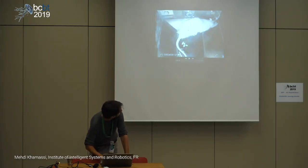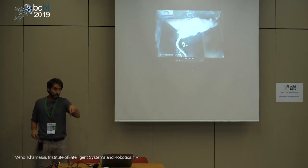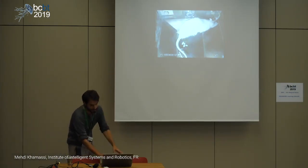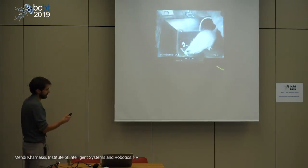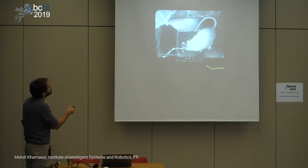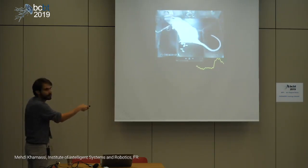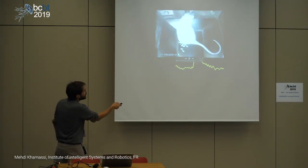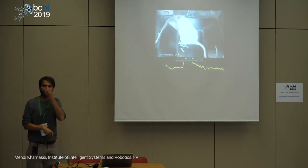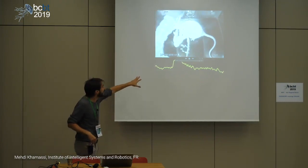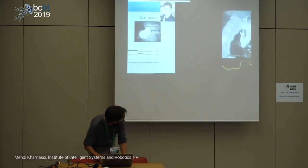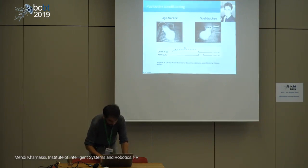In sign-trackers after learning, when the lever appears there are big bursts of dopamine — a classical dopaminergic response to the CS. When the lever is retracted there's no response, and the animal gets a reward. These animals are attracted by the sign, and you see classical reward prediction error encoding in the dopaminergic activity.